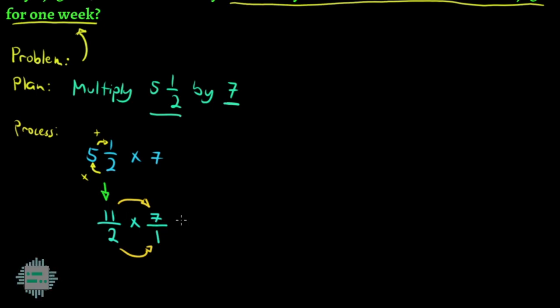11 times 7 will give us 77. Habang sa ating denominator we have 2 multiplied by 1. It's simply 2.